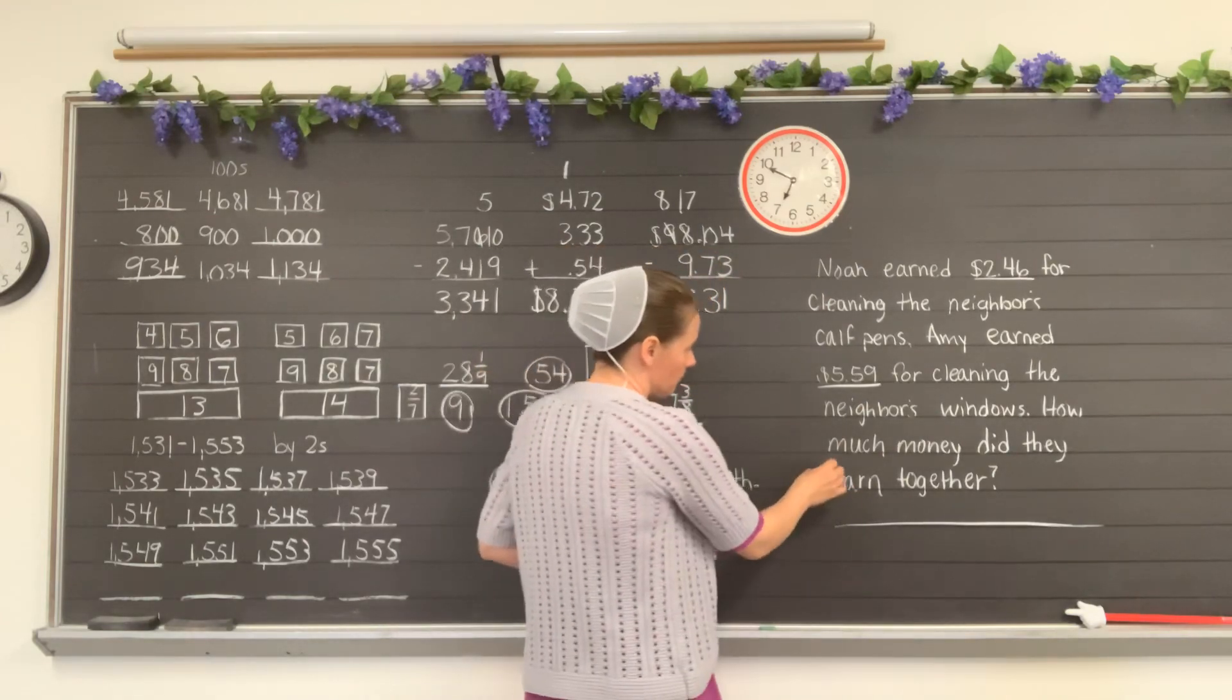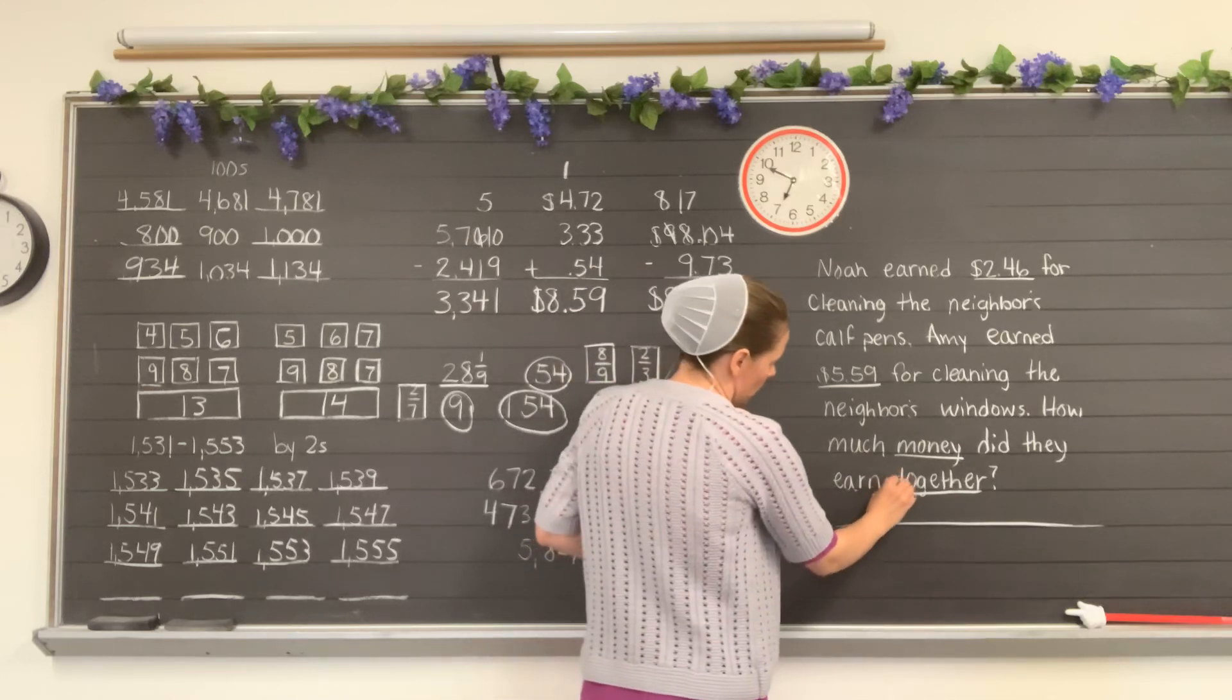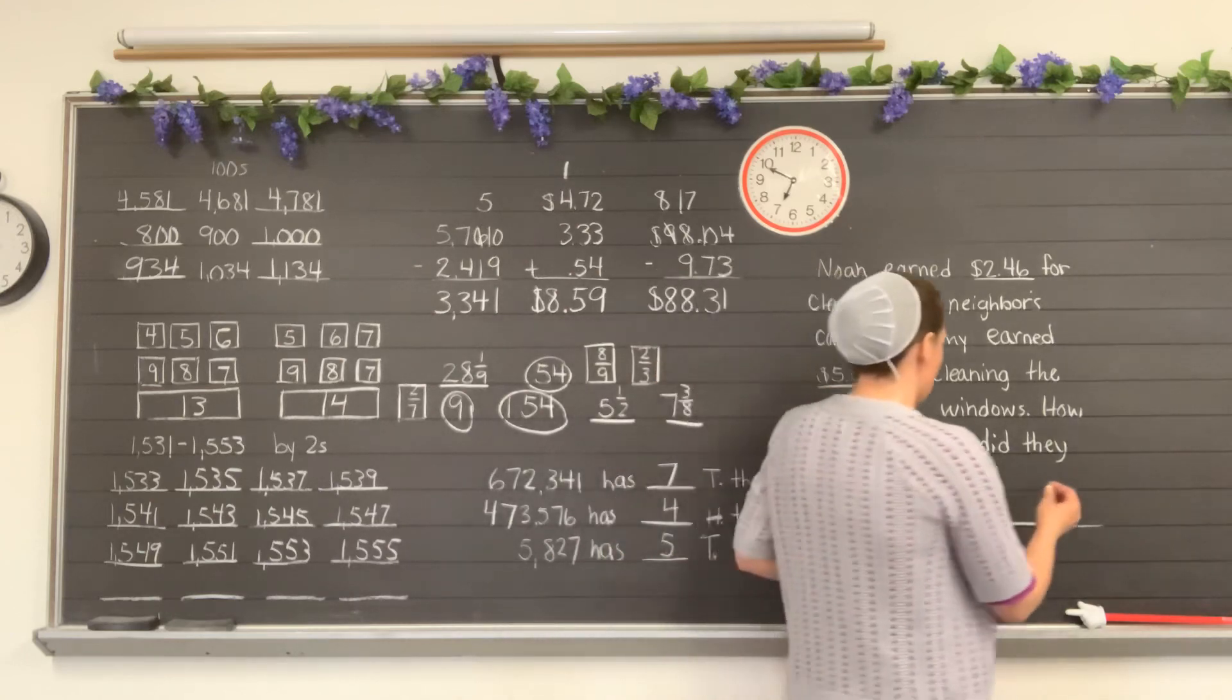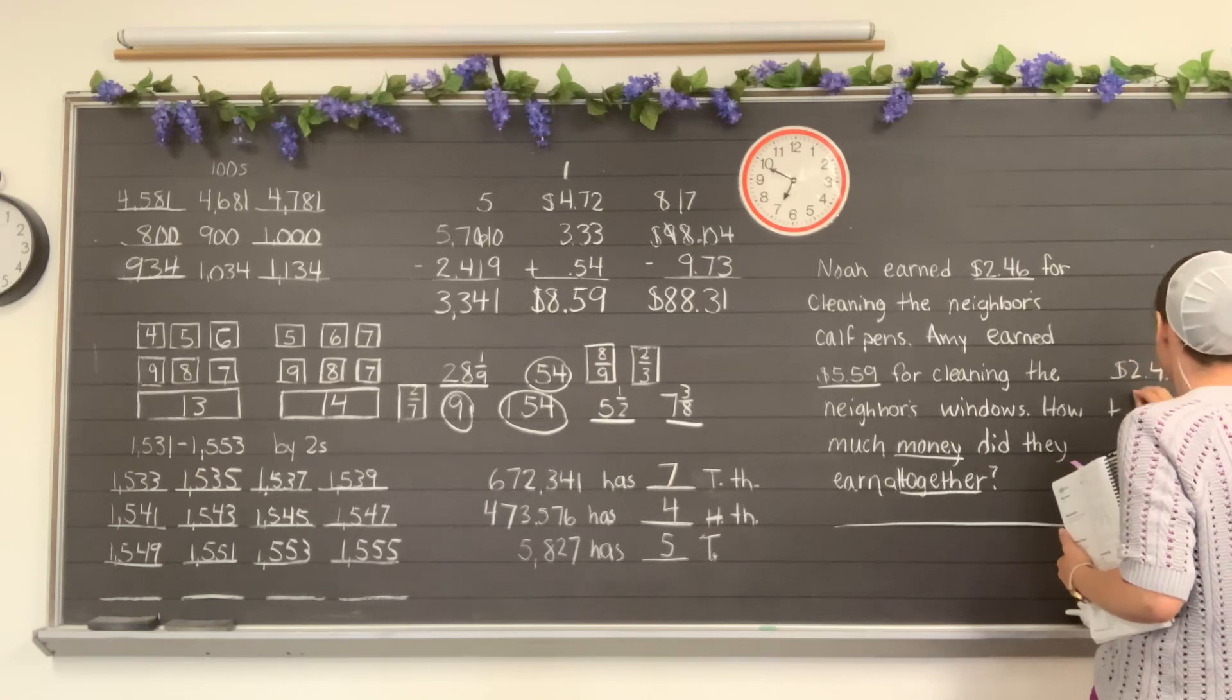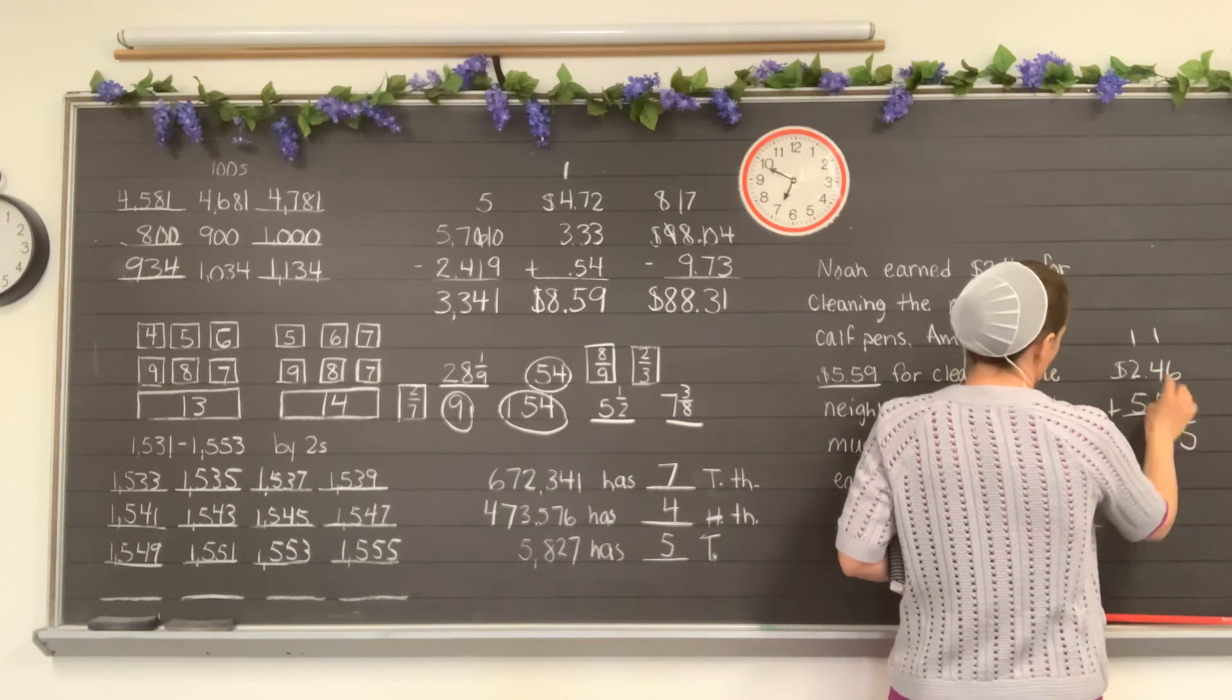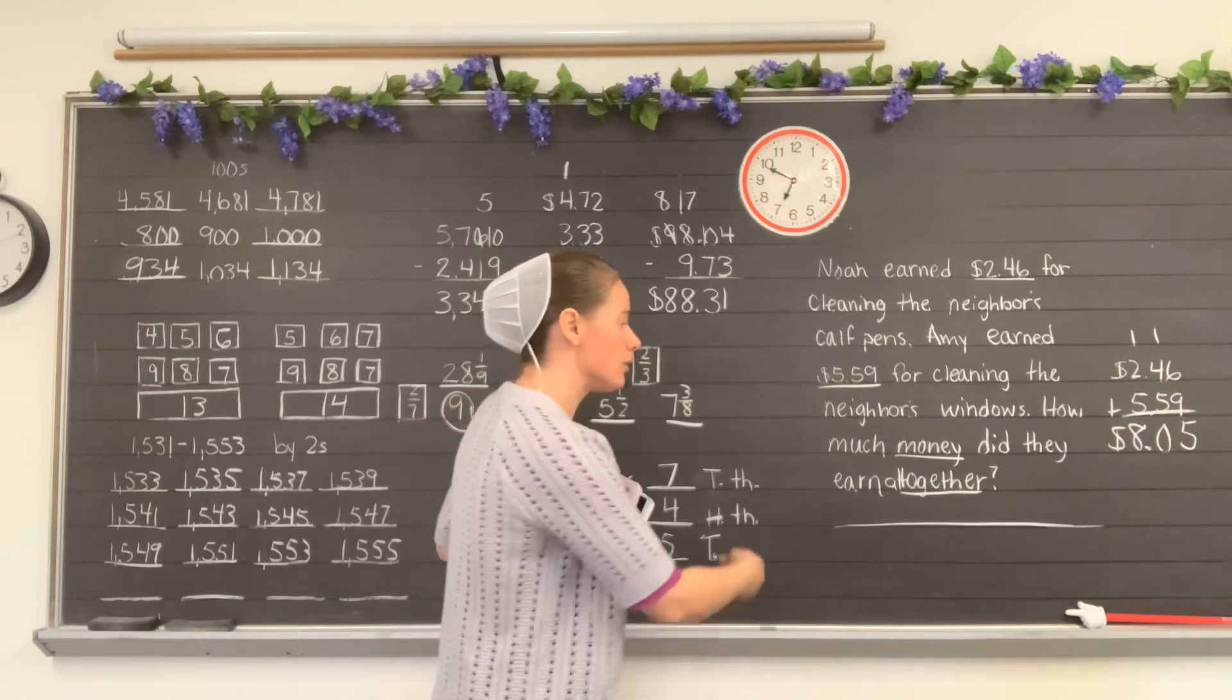Let's underline $2.46 and $5.59, and then money and together. So I think that's actually supposed to probably say all together, so we're just putting an A on there. So all together. And whenever you have all together, we add, right? So we're going to add. We'll put our work over here. $2.46 plus $5.59. So 6 plus 9 is 15. 1 plus 4 is 5 plus 5 is 10. 1 plus 2 is 3 plus 5 is 8. And $8.05 was what they earned all together. And then you fill in your blank down here.